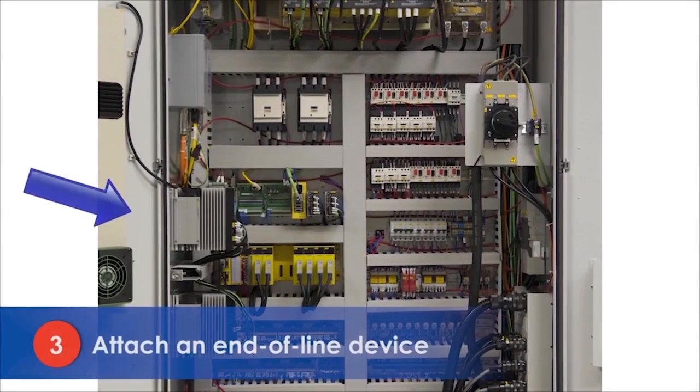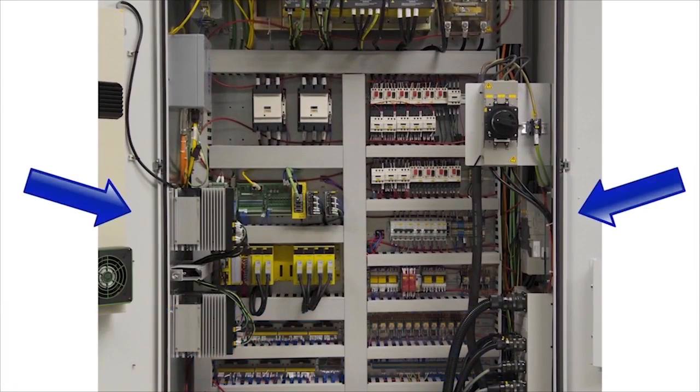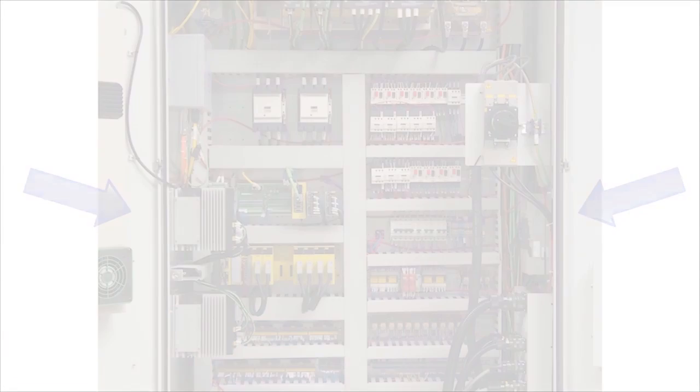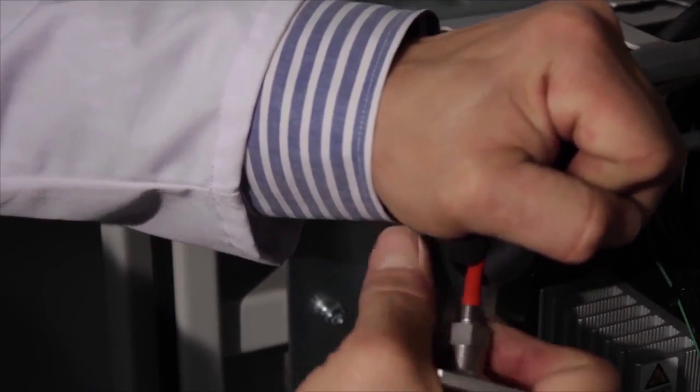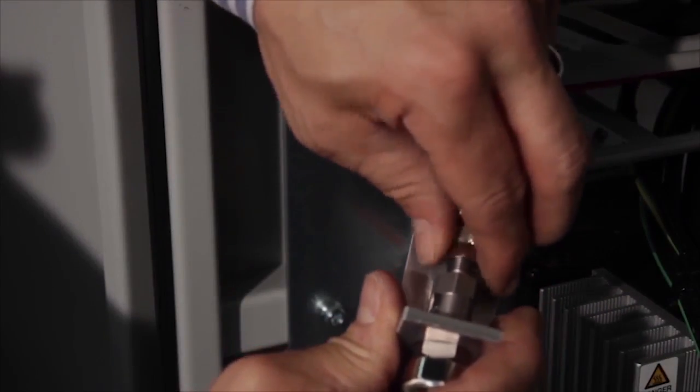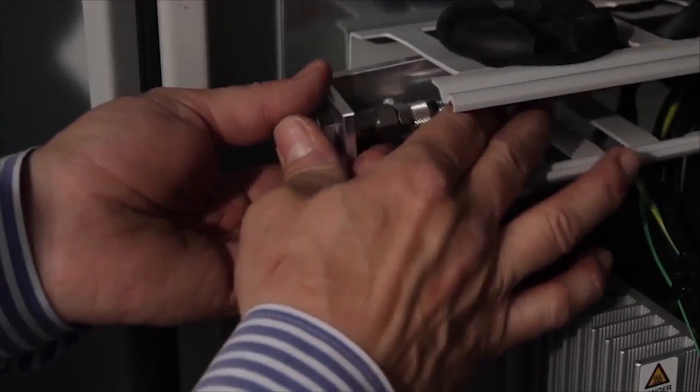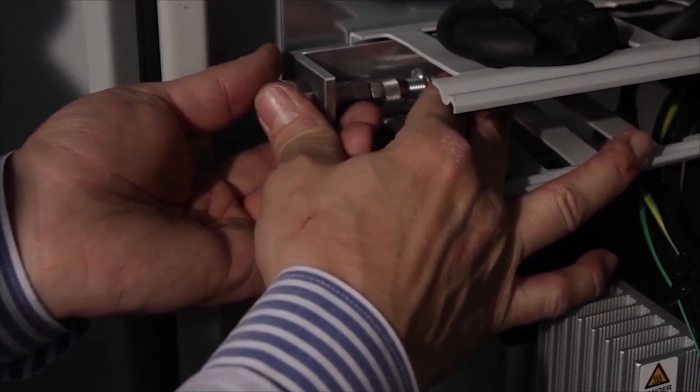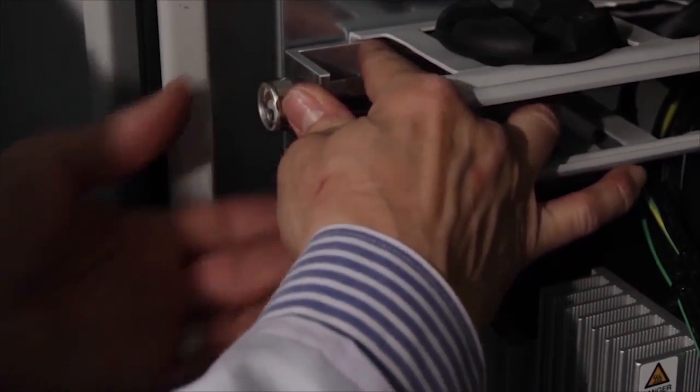Install the end-of-line device out of the way, yet someplace you can reach easily when pressurizing the tube and reading the pressure gauge. Attach the sensor tubing by inserting the tube into the fitting and tightening it. The end-of-line device can be attached to the cabinet wall with a self-adhesive bracket.